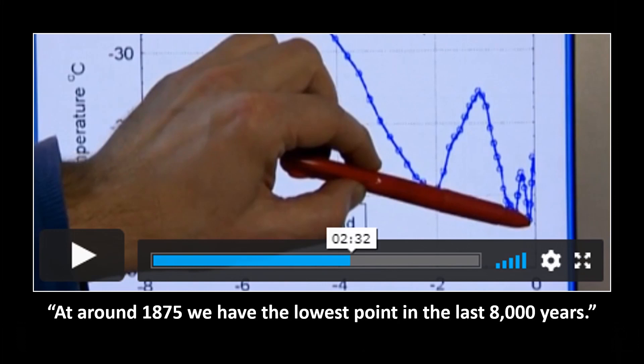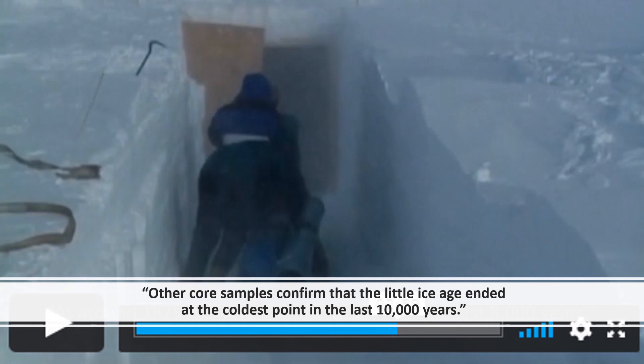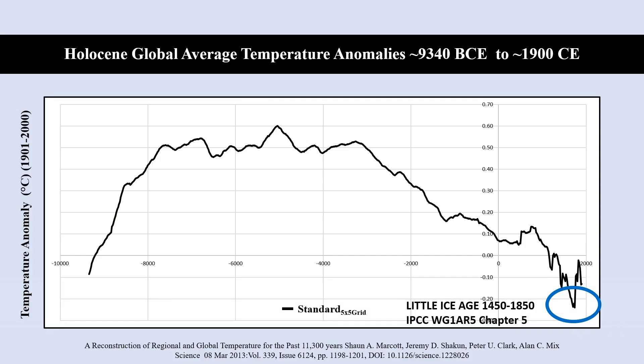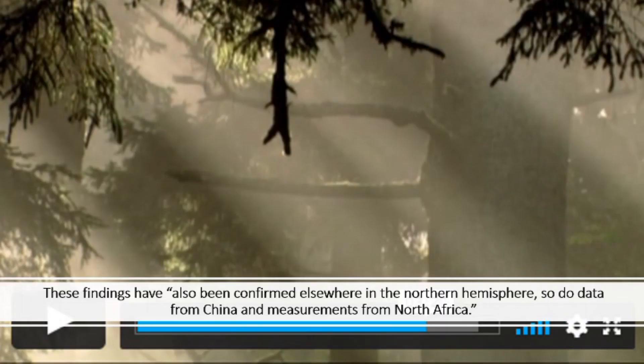He goes on to say that other core samples confirm that the Little Ice Age ended at the coldest point in the last 10,000 years. This is confirmed by the IPCC definition of the Little Ice Age as taking place from 1450 to 1850. These findings have also been confirmed elsewhere in the Northern Hemisphere, including data from China and measurements from North Africa.